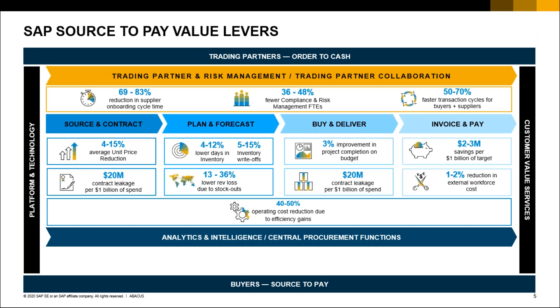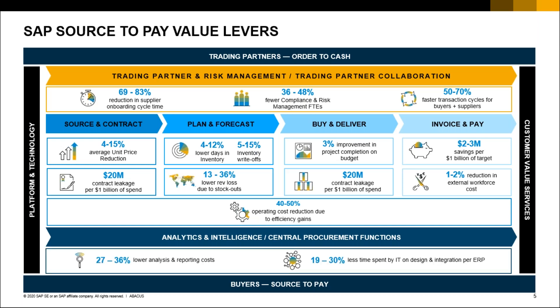These are the value levers that make SAP Ariba a market leader. We have observed 40 to 50 percent operational cost reduction due to efficiency gains throughout the procurement process. With SAP Ariba analytical and intelligence capabilities, you get 27 to 36 percent lower analysis and reporting cost — you don't have to buy a separate solution for reporting. There is also 19 to 30 percent less time spent by IT on design and integration per ERP. SAP Ariba is a cloud solution — you don't have to worry about servers or infrastructure.